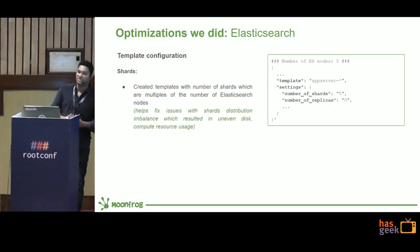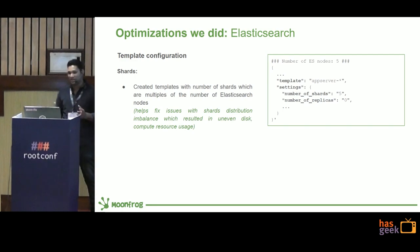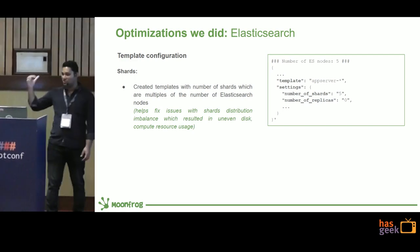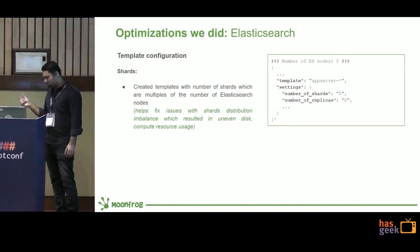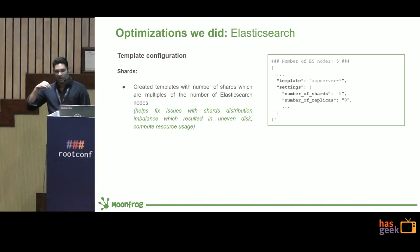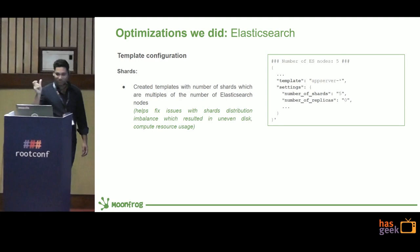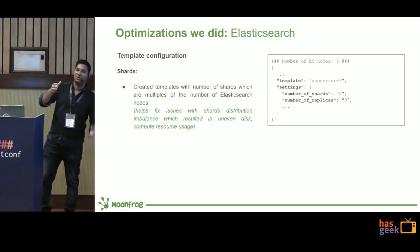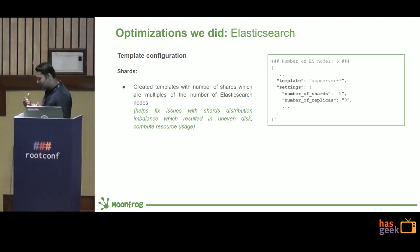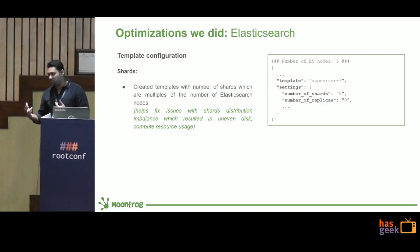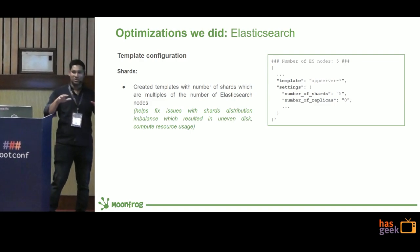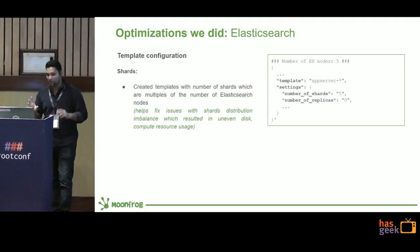Moving on to the next optimization — Elasticsearch template configuration. When you create an index template, you can set the number of shards. I recommend making the shard count a multiple of the number of nodes. For example, if you have 5 Elasticsearch nodes, set shards to 5, 10, or 15, so that shards are evenly distributed across all nodes and shard imbalance issues won't occur.